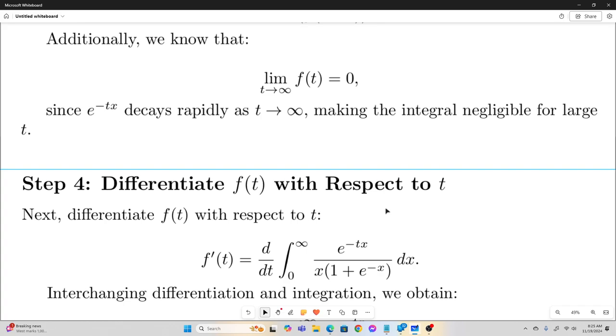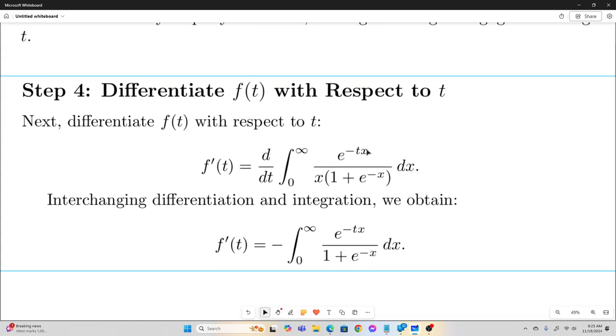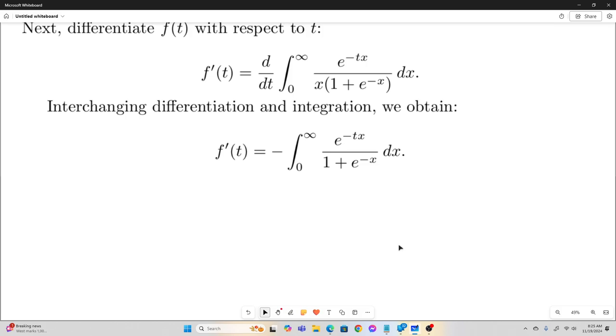Alright, next we're going to differentiate our f of t with respect to t using the Leibniz rule for differentiation under the integral sign. We just bring this derivative inside as a partial derivative. And taking the partial derivative of this integrand with respect to t is just going to give you this. And we'll bring the negative sign outside. Okay, so now we have f prime of t.